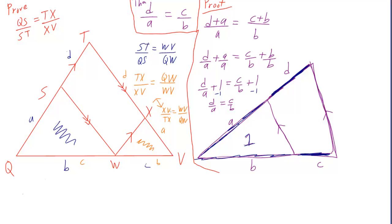Well, that means those two things are equal to each other. So then that means I can write that st over qs is equal to xv over tx. And that's very similar to what we're trying to prove.